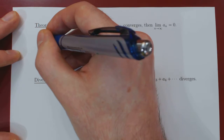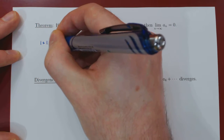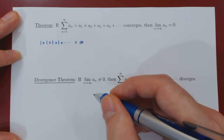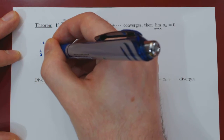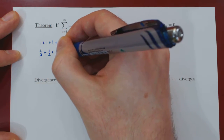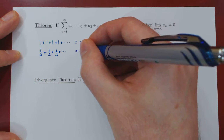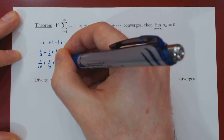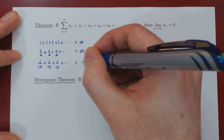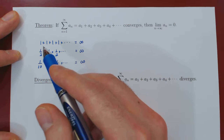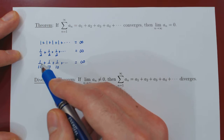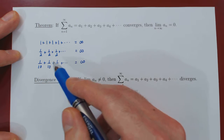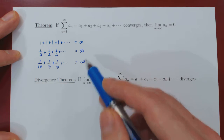How small? If you add 1 forever — so 1 plus 1 plus 1 plus 1 forever — of course this will be equal to infinity. If you add 1 half forever, this will still be equal to infinity. And if you add 1 over 10 forever, the result will also be infinity. So it doesn't really matter how small we go. We could add 1 over 100 forever, or 1 over a billion forever. If we add constantly a number that is fixed, then the result will blow up to infinity.